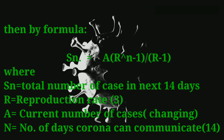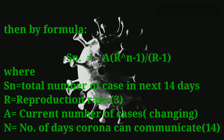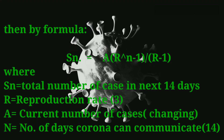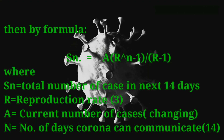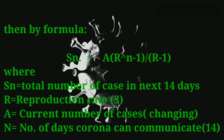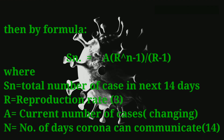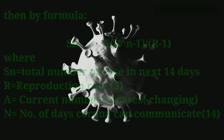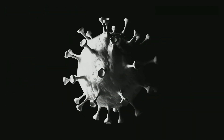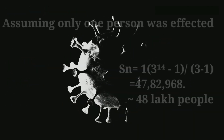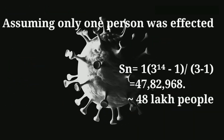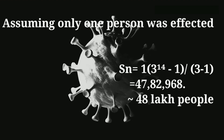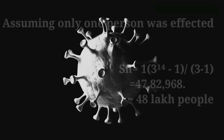R here is the reproduction rate of the virus — that is, how many people are infected by one person in a day. N is the number of days that corona can communicate with human beings. By that formula, we can see one person has the potential of infecting 48 lakh people in 14 days.